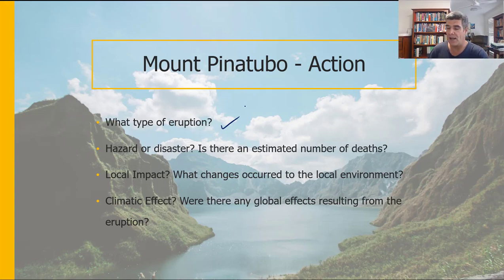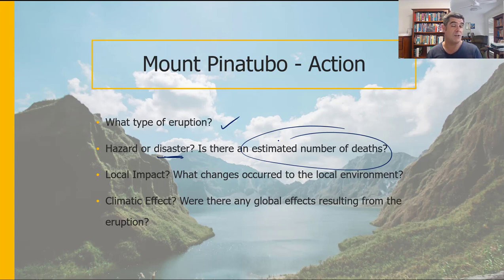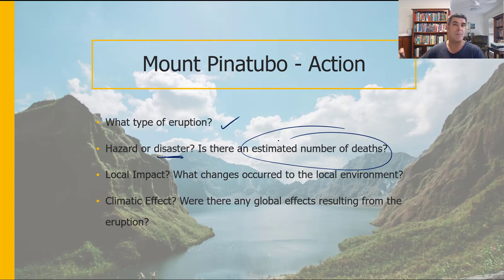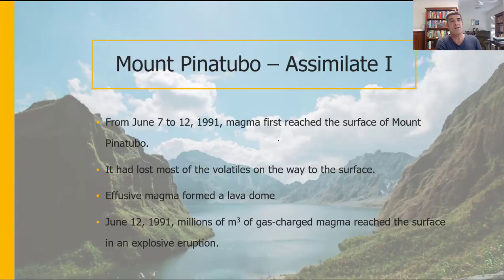Next, hazard or disaster? Remember our definition for where a hazard becomes a disaster. What are the critical measures — do we have an estimation of the number of deaths, and is that the only thing we should look at? Then there's the local impact around Mount Pinatubo, and climatic effects, which are global or at least more widespread than the local. A climatic effect needs to be observable and measurable over some period of time, showing an impact in the atmosphere actually affecting the climate.